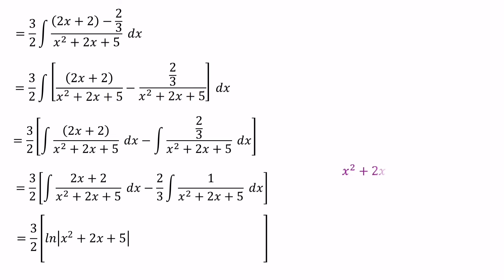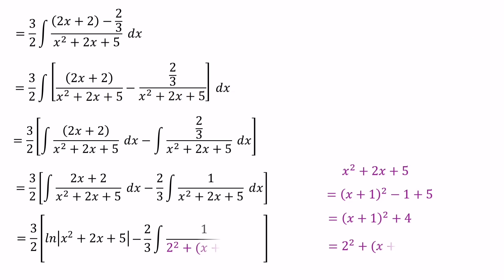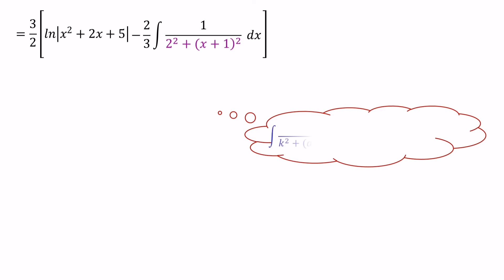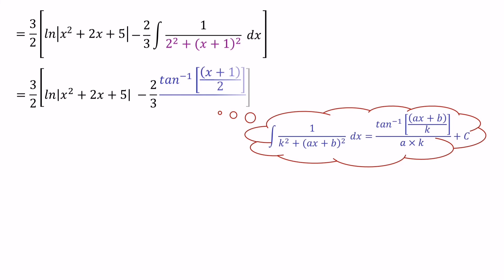The expression x squared plus 2x plus 5 we can write as x plus 1 all squared minus 1 plus 5, giving us x plus 1 all squared plus 4. The value 4 we can write as 2 squared, so we have 2 squared plus x plus 1 all squared. The integral of 1 over k squared plus (ax plus b) all squared equals tan inverse of (ax plus b) over k, divided by a times k. Here k equals 2, a equals 1, and b equals 1.